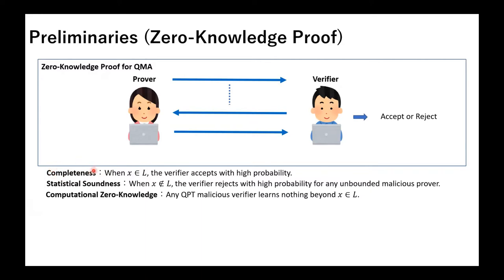The first property is completeness. This guarantees that when the instance X is a yes instance, the verifier accepts with high probability. The second property is statistical soundness. This guarantees that when the instance X is not a yes instance, the verifier rejects with high probability for any unbounded malicious prover that tries to make the verifier accept. The third property is zero-knowledge. This guarantees that any malicious verifier learns nothing beyond the fact that the instance X is a yes instance.